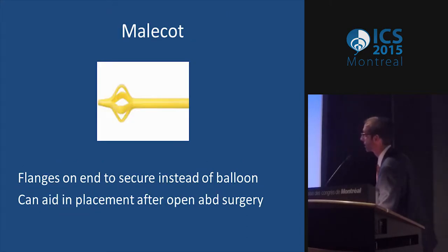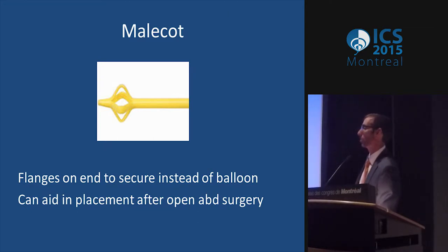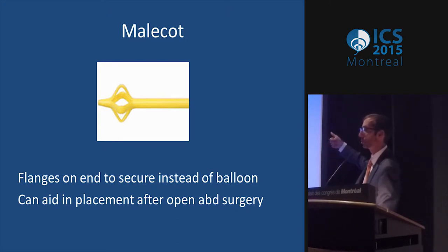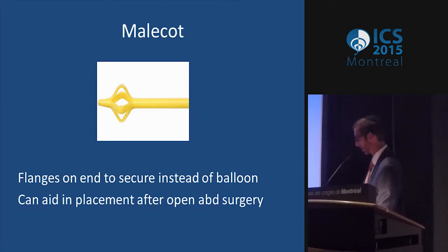The council tip catheter is also helpful when you're worried about being able to get a catheter back in — for example in patients with bad stricture disease. You can pass a wire through the catheter, pull it out, and pass a new one in. This is the Malakot catheter — not something we put through the urethra, that would be torturous. We use it when leaving a catheter after bladder surgery. Its advantage is it has no balloon port; it has flanges that hold it in place, and when it's time to remove, you pull hard and they straighten out.